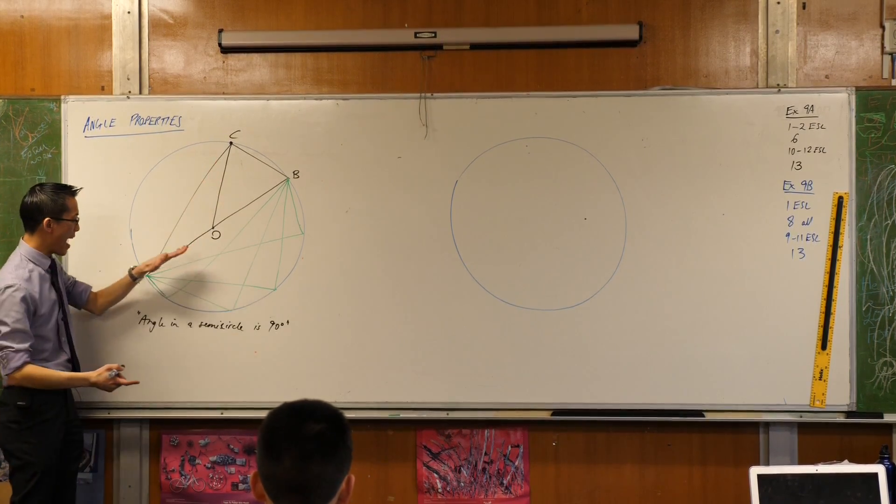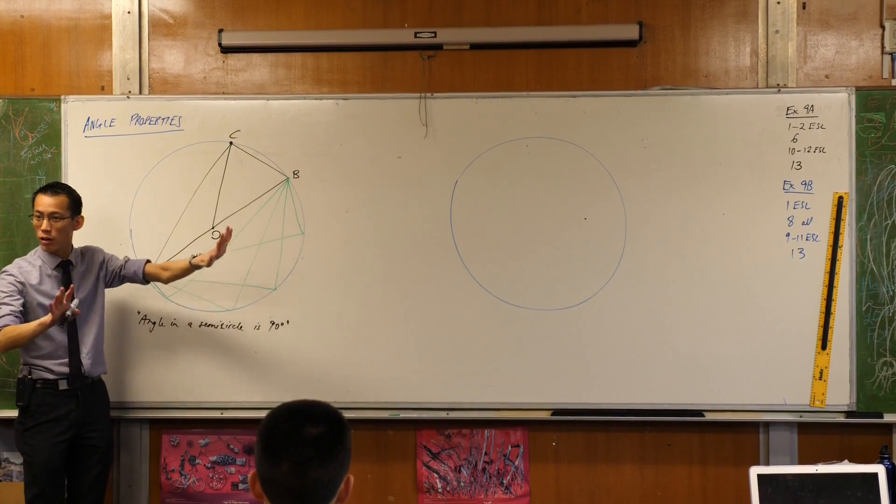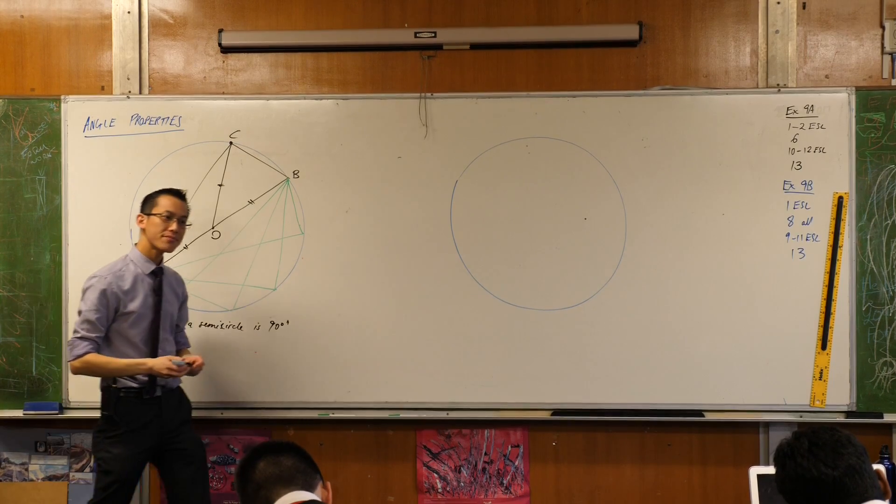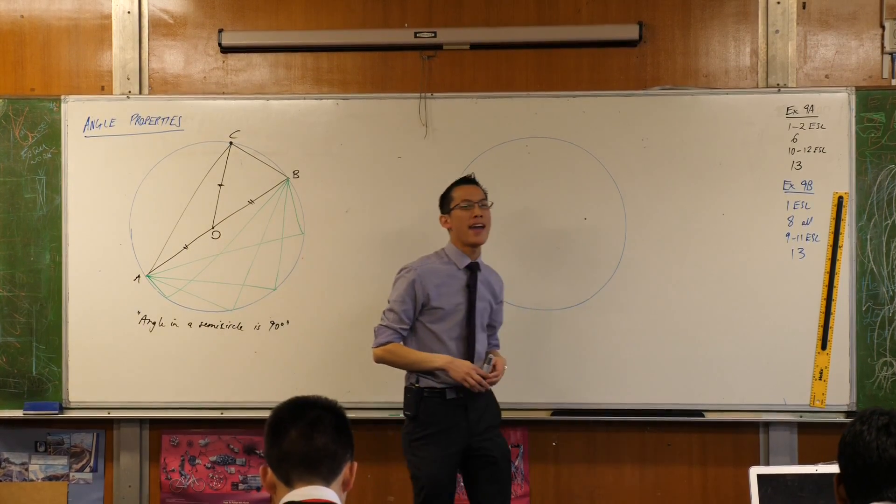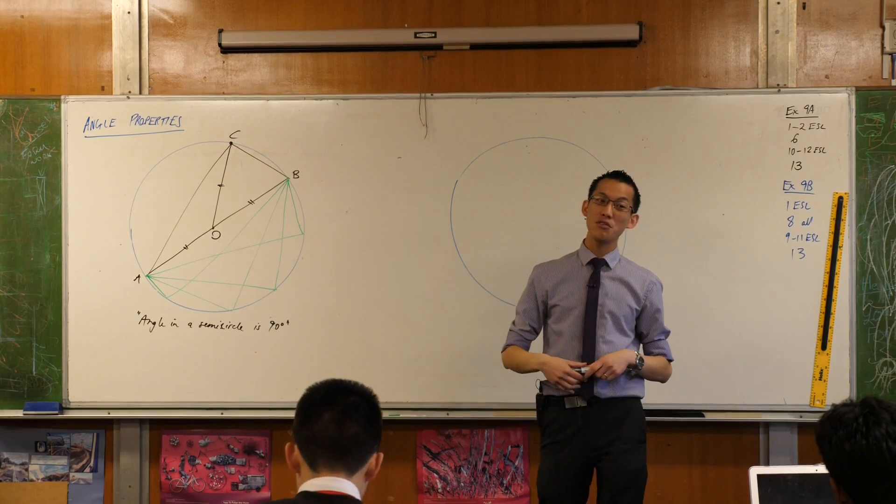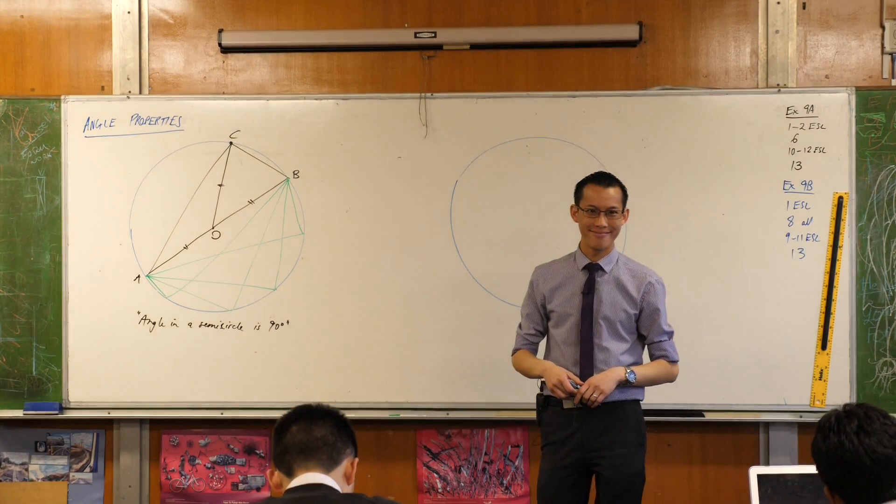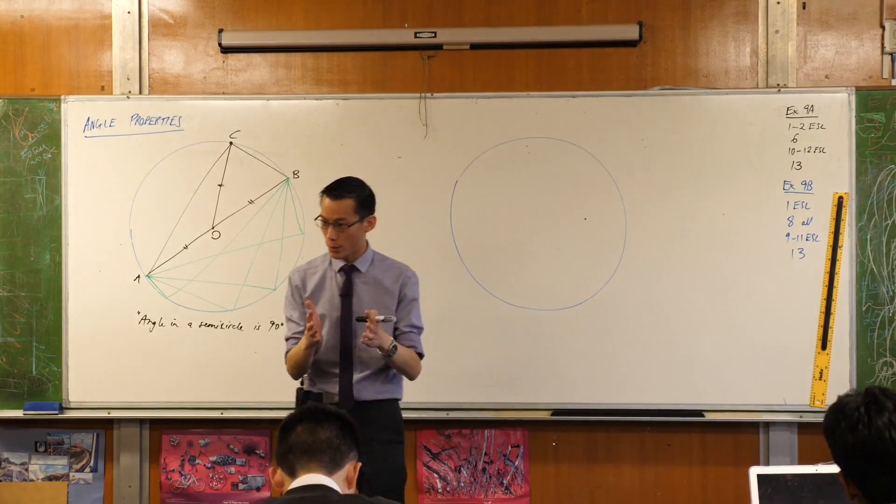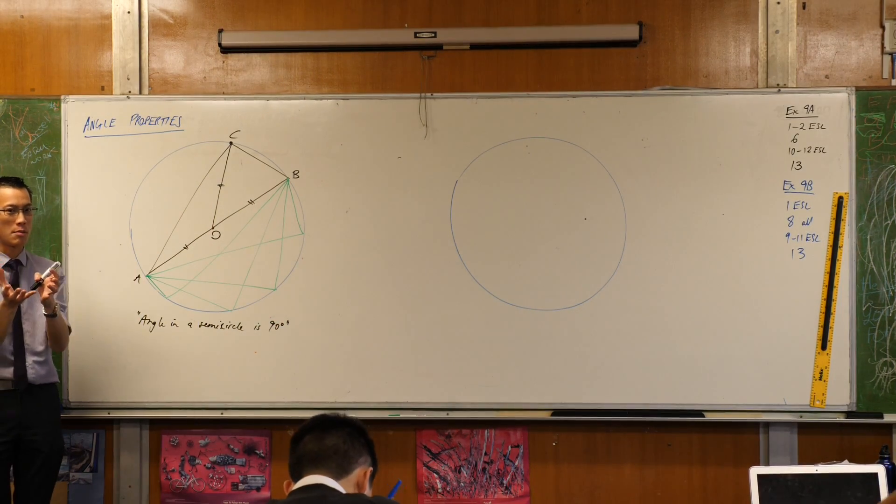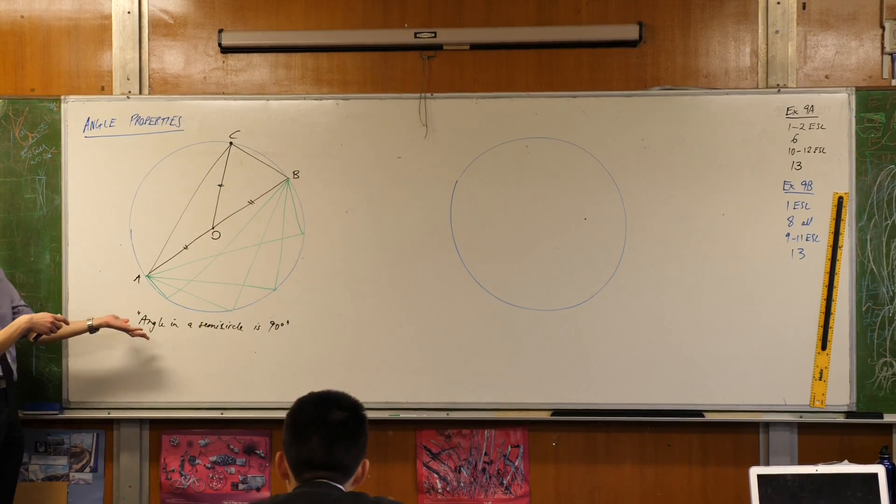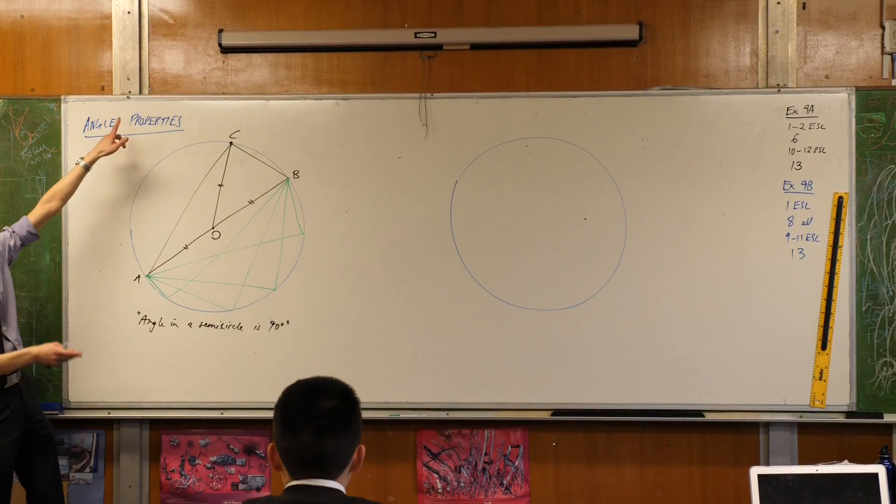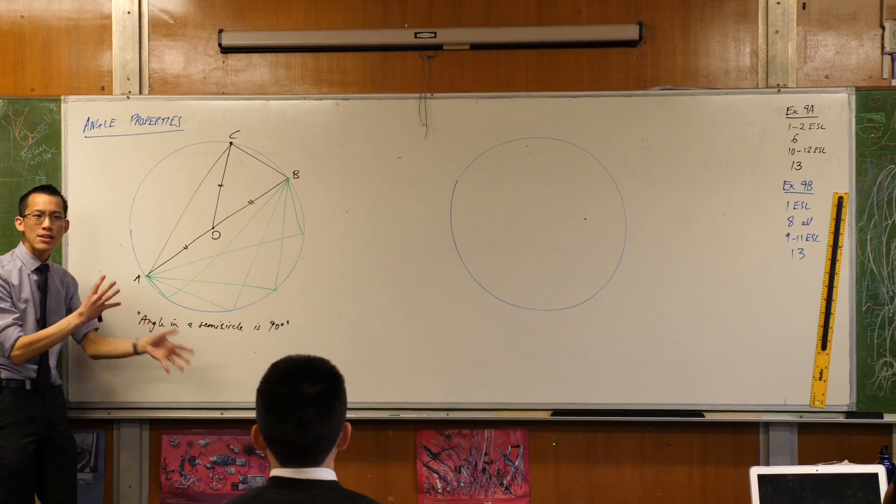They're all radii. OC was a radius, AO is a radius. So in fact, maybe you want to even mark them in as such. So having made this pair of isosceles triangles, what are the kinds of things that you know about isosceles triangles? You know you've got a pair of equal sides. What else? You've got a pair of equal angles. Which of those do you think is going to be more useful to me in trying to prove this? Probably the angles, right? This is a statement about an angle. Okay, it's a statement about angles. So therefore,